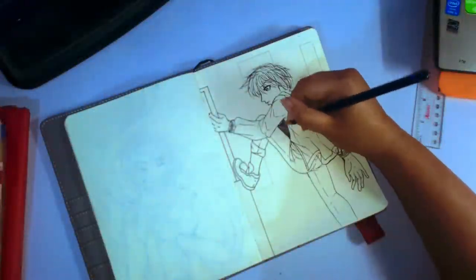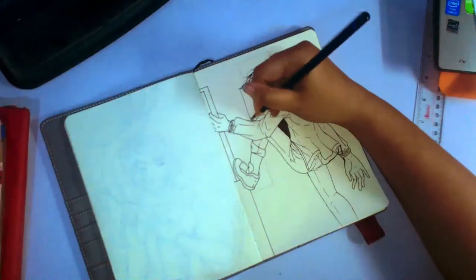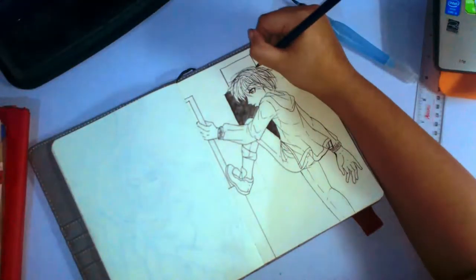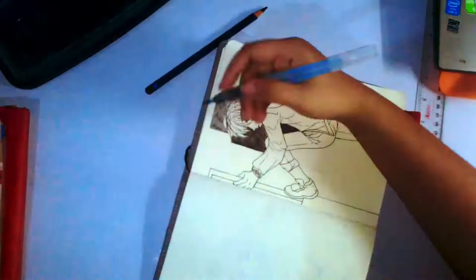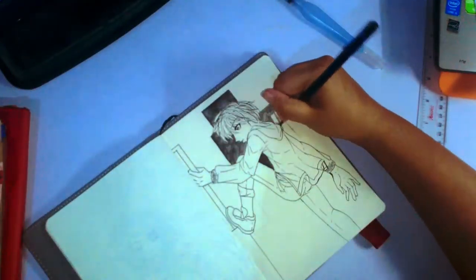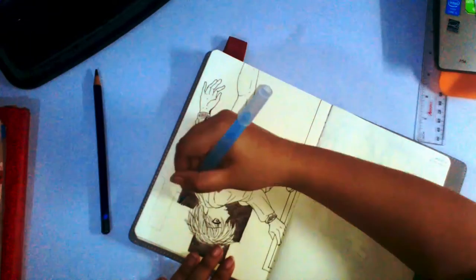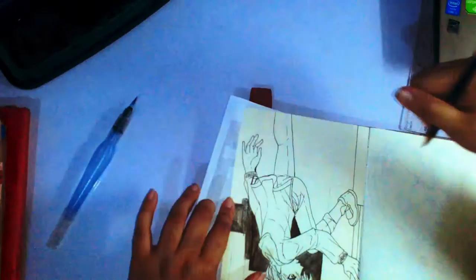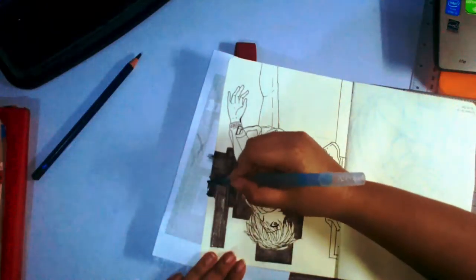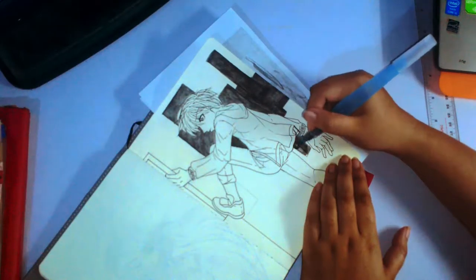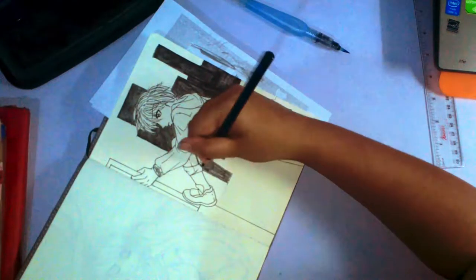I'm using the Derwent Inktense as usual just to fill in the background. It's a lot easier to spread the pigment evenly when I use the Derwent Inktense pencils compared to my Faber-Castell Pitt Artist pens. I use the Pitt Artist pens when I'm covering smaller areas.